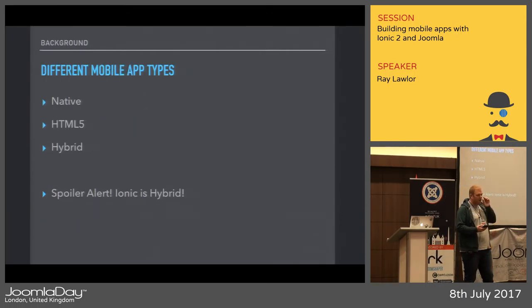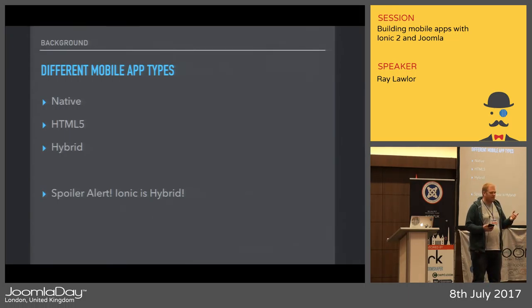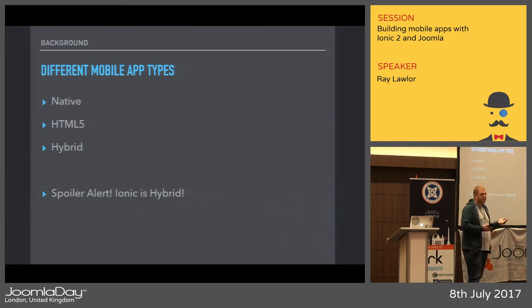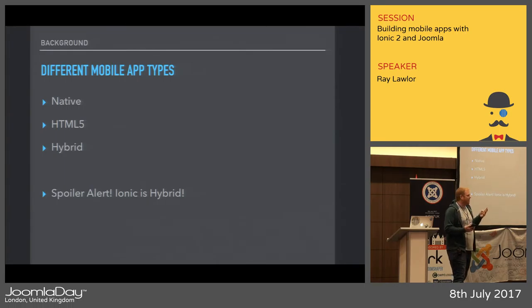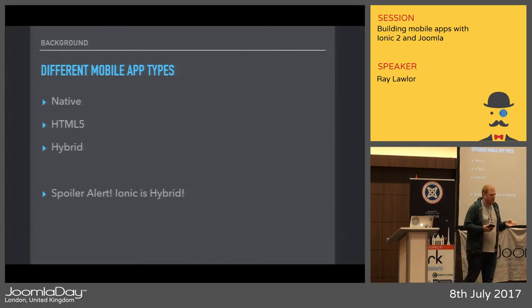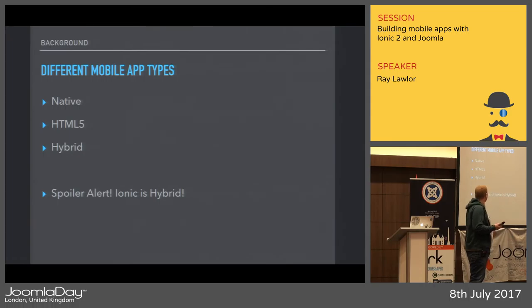I was going to ask for a show of hands about whether everyone in the room understands the different types of mobile apps. There are three different types of mobile apps you can build: the first is native, there's HTML5, and there's hybrid — and spoiler alert, Ionic is hybrid.